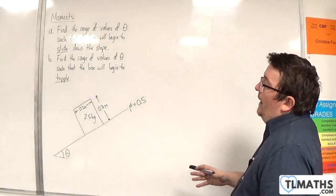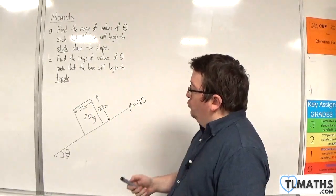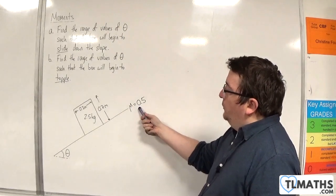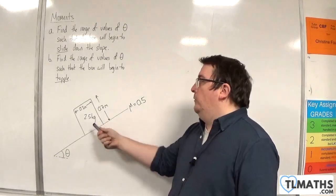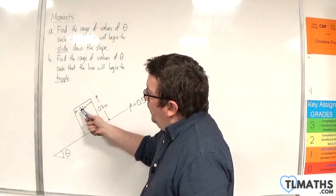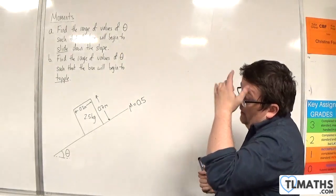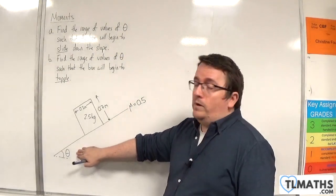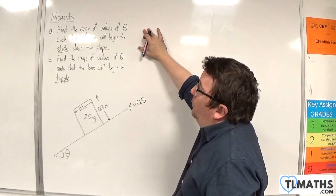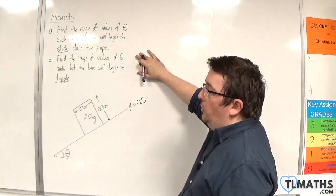In this example, we have a box on a slope at an angle of theta degrees, and the coefficient of friction between the box and the slope is 0.5. The box is modelled as a rectangular lamina. It has a mass of 2.5 kilos, a width of 0.3 metres, and a height of 0.7 metres. The angle of theta is going to be steadily increased. We need to find the range of values of theta such that the box will begin to slide down the slope, and then for part b, find the range of values of theta such that the box will begin to topple.